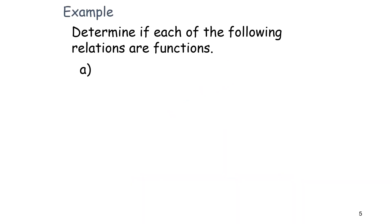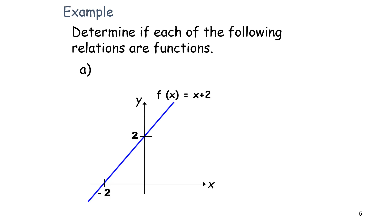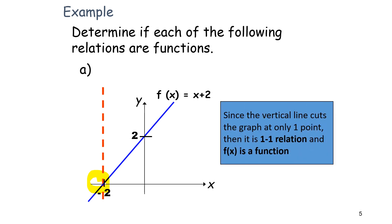Example: determine each of the following relations as a function. From this graph, when we do the vertical line test, it only cuts at one point. When the vertical line cuts the graph at only one point, it is called a one-to-one relation, and it is also a function.